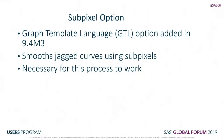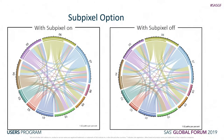This still wouldn't work unless SAS had the sub-pixel option. In graph template language, this option was added in 9.4 maintenance package 3—it smooths jagged curves using sub-pixels, the pixels in between pixels. It's necessary for this to work. With sub-pixel on, the curved rectangles are really smooth. Without it, especially in the bottom right corner, the curves become a little wonky and wavy. That sub-pixel option is probably the keystone that really lets this method work.